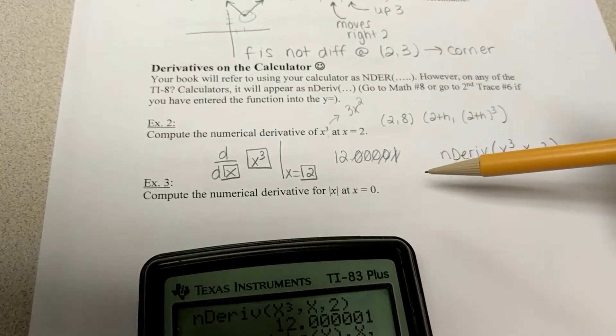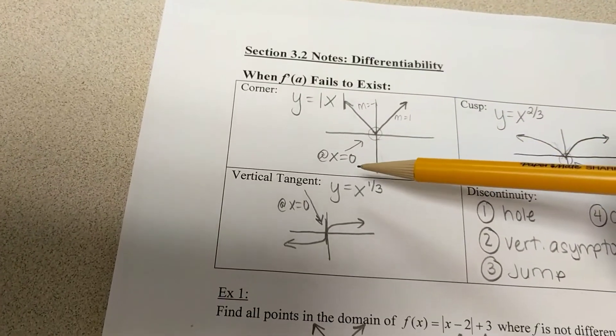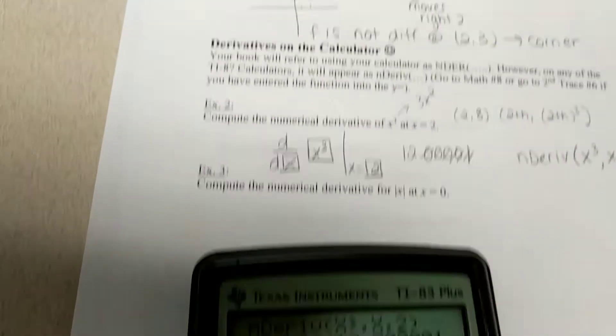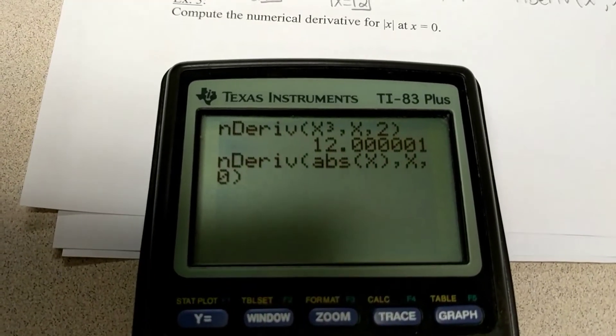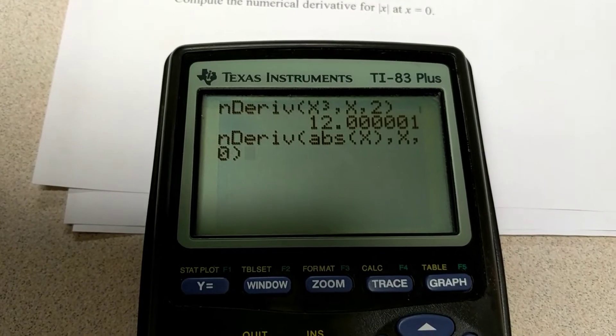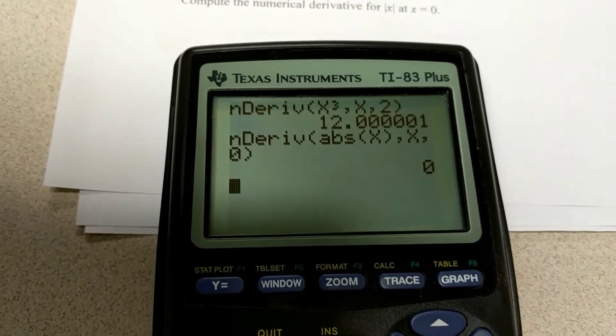Now, what we should know from earlier is that the slope at 0 does not exist. It's a corner. However, I put it into my calculator. And remember, my calculator is going a little bit to the left of 0 and a little bit to the right of 0. And it says, hey, the slope is 0.